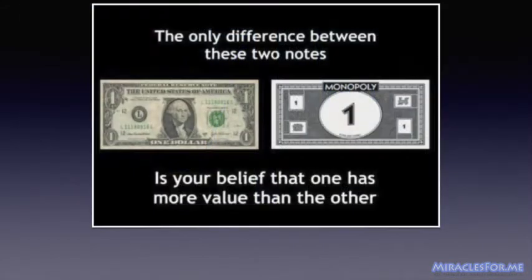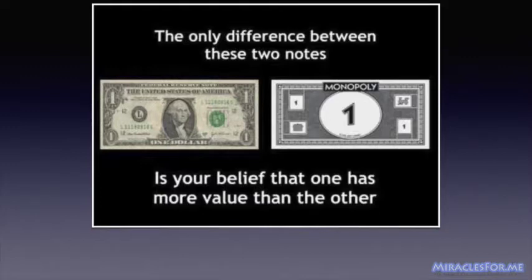Reason number two is that currencies are made of worthless material, such as paper, cheap metals like zinc, or simple records on a computer. Gold and silver have value in and of themselves because they can be used to make many things, from electronics to jewelry. But the paper that the dollar or any other currency is printed on is just paper. It has no value except the one the public agrees to give it. It is a confidence game that collapses the minute the confidence is shattered. Paper cannot store value.